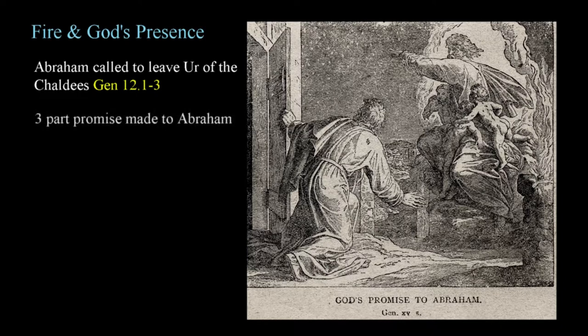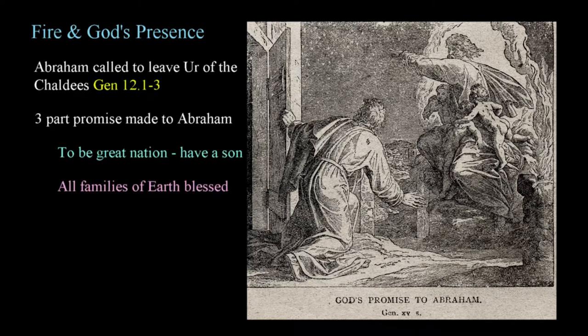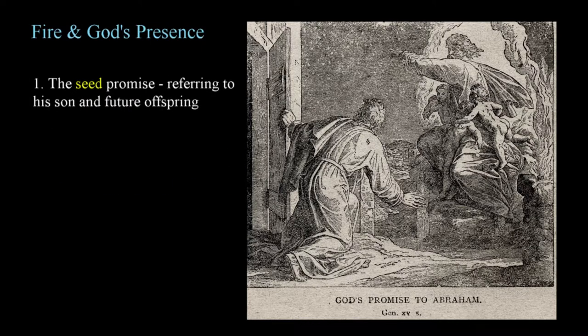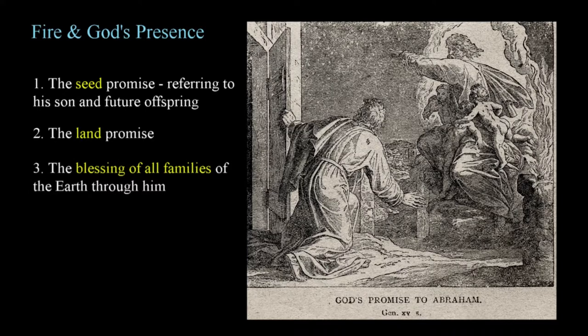A three-part promise was made to Abraham, or Abram as he's known at the beginning of the story. In the future, his offspring would become a great nation that would eventually bless all families of the earth. He would have a son, Genesis 17:15, and his seed would inherit the land that God would show him, Genesis 15:18. These promises are restated several times and can be summarized as the seed promise, referring to his son and future offspring, the land promise, and the blessing of all families of the earth through him.